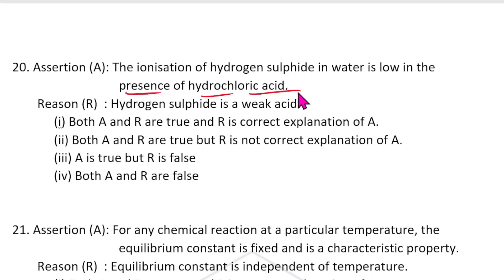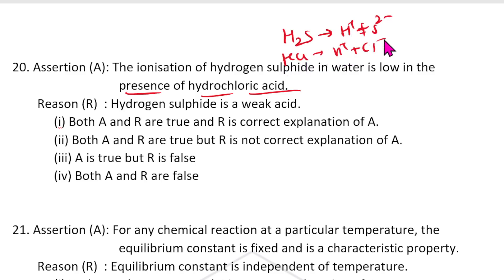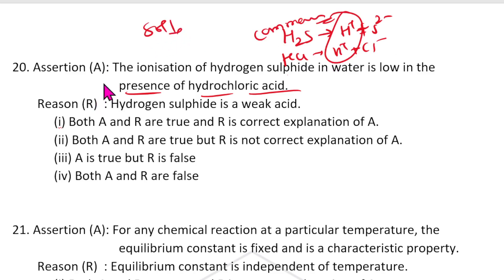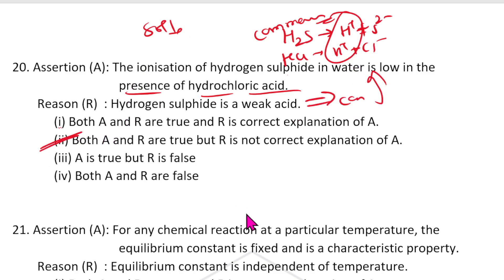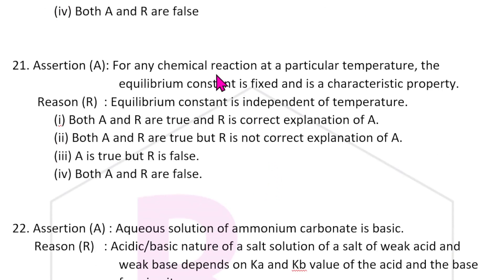Twentieth question: The ionization of hydrogen sulfide in water is low in the presence of hydrochloric acid. H₂S ⇌ H⁺ + HS⁻ and HCl → H⁺ + Cl⁻. The common H⁺ ion from HCl suppresses ionization of H₂S via the common ion effect, decreasing solubility. Assertion A is correct. Hydrogen sulfide is a weak acid — also correct, but this is not the reason; the common ion effect is the reason. The answer is 2.